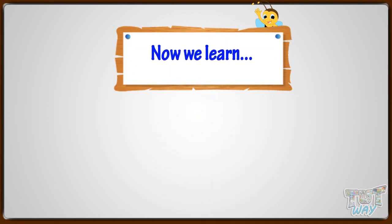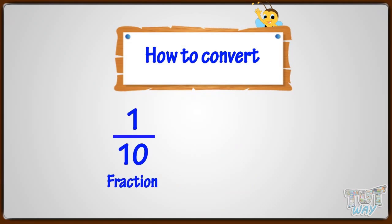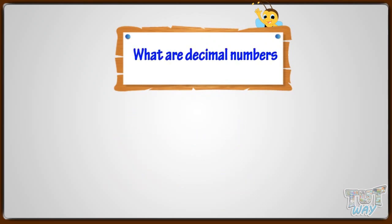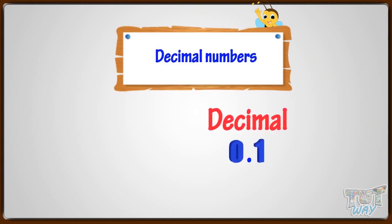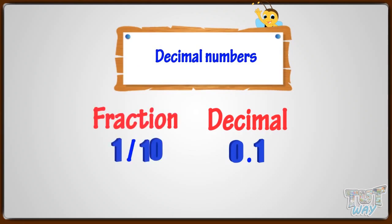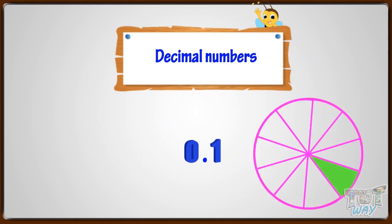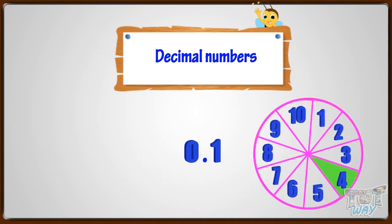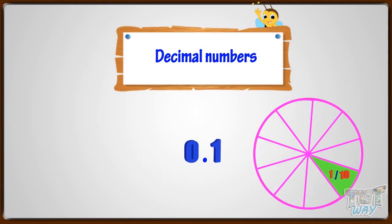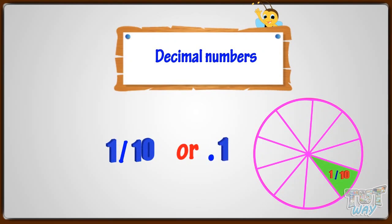Now we will learn how to convert a fraction number into a decimal number. Let's see what decimal numbers are. A decimal number is another way of representing a fraction by showing part of the whole by placing it on the right side of a period, like 0.1. Here, 0.1 represents 1 part out of 10 parts. It is 1 by 10.